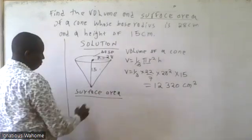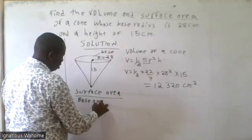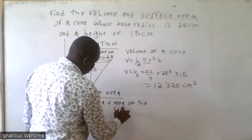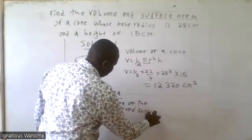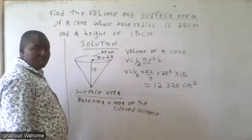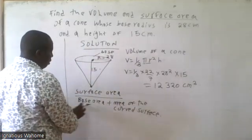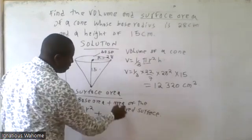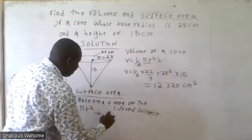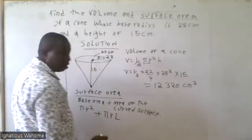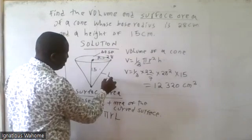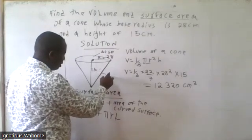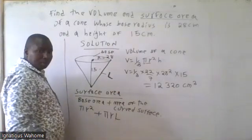The surface area of the cone consists of the base area plus the curved surface area. The base area is circular, so it's pi r squared. The curved surface area of a cone is given by pi r L, where L is the slant height. Because we are given the radius and the height, we need to use Pythagoras' theorem to find L.